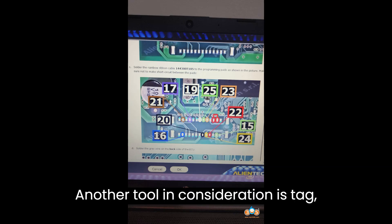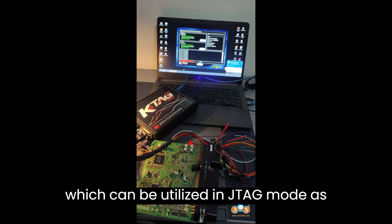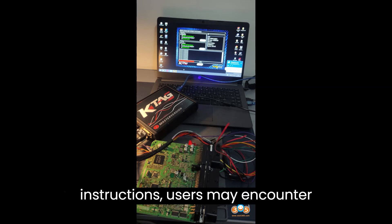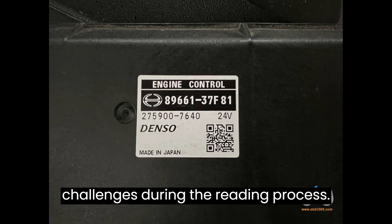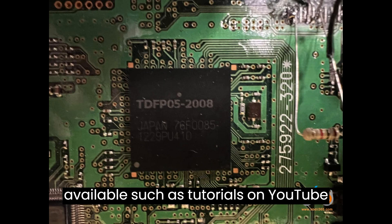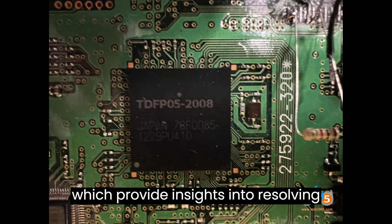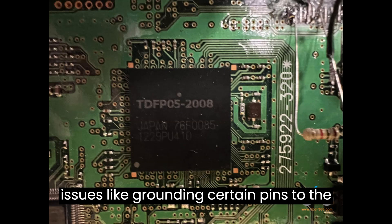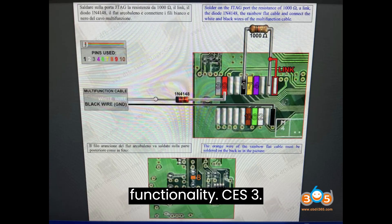Another tool in consideration is TAG, which can be utilized in JTAG mode as well. Despite having its own set of instructions, users may encounter challenges during the reading process. Fortunately, there are resources available, such as tutorials on YouTube, which provide insights into resolving issues like grounding certain pins to the shell of the unit for improved functionality.